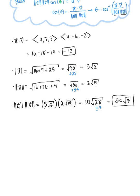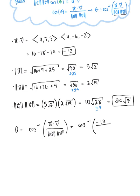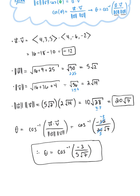Now we have all the pieces needed to compute the angle. Theta equals inverse cosine of the dot product of u and v divided by the magnitude of u times the magnitude of v. Plugging in our values: inverse cosine of negative 12 divided by 20 times the square root of 7. Since 12 and 20 are both divisible by 4, this simplifies to inverse cosine of negative 3 over 5 times the square root of 7. This is our final answer, which we leave in exact form, especially for a quiz or exam where calculators are not allowed.